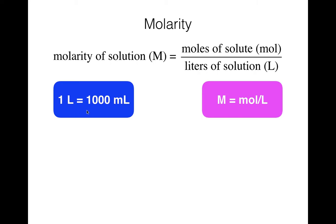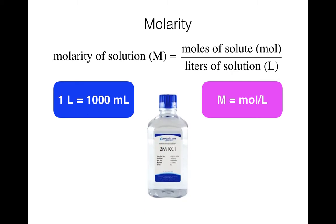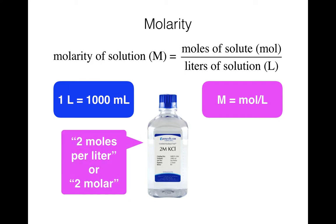Another thing to keep in mind for the calculations: you'll need to remember your metric conversions. One liter is equal to 1000 milliliters. If you get that down, that'll make your calculations a lot easier, and you are allowed to just convert that in your head. So if you have a solution — like here is a potassium chloride solution — and it says 2M, that means it's a 2 molar solution, or 2 moles per liter.